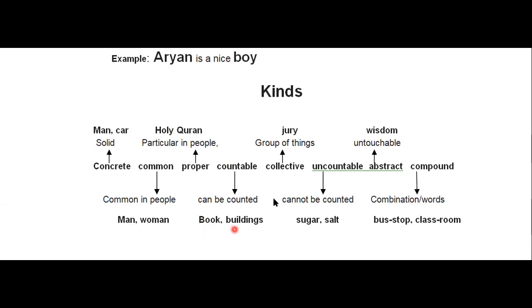Collective noun means a group of things, like jury, team. Then uncountable noun — things that cannot be counted, like sugar and salt. Next is abstract noun — untouchable and uncountable, it can only be felt, not touched. Like wisdom, truth, love. If someone says 'I love you', you can feel it but cannot see, measure, or count it. Similarly honesty — you can feel it but cannot touch it.